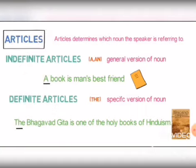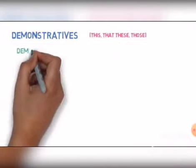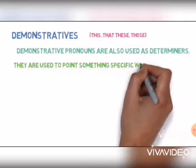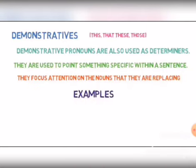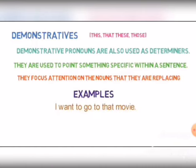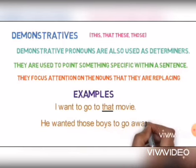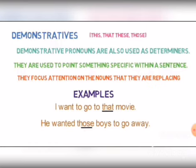Now let's look into the next category: demonstratives. Demonstratives are words like this, that, these, those. Demonstrative pronouns are also used as determiners. They are used to point something specific within a sentence and focus attention on the nouns that they are replacing. For example, 'I want to go to that movie.' Here we are pinpointing specifically to that movie. Another example: 'He wanted those boys to go away.' Here we are pinpointing specifically to those boys. As demonstratives determine a noun, they come in the category of determiners.